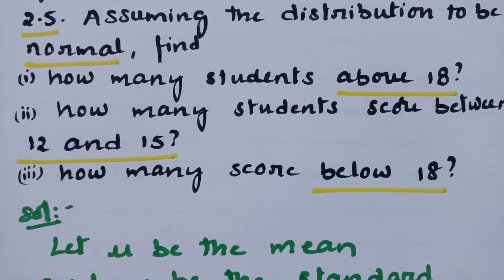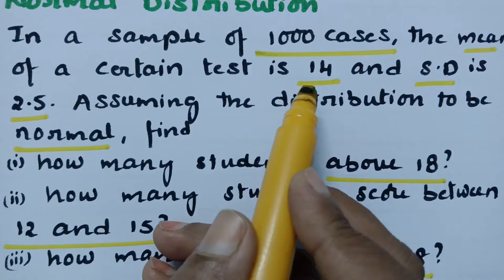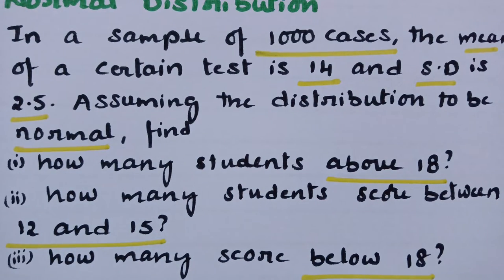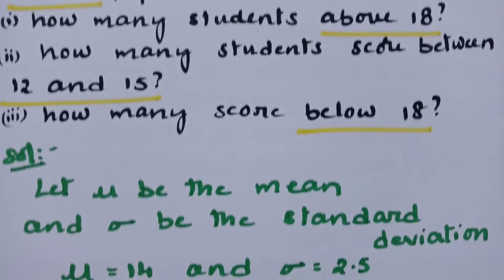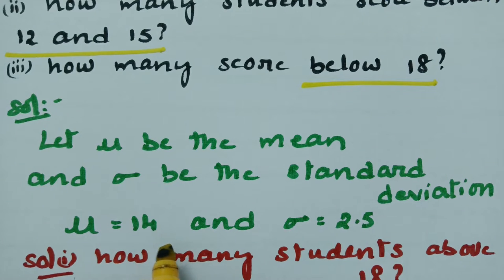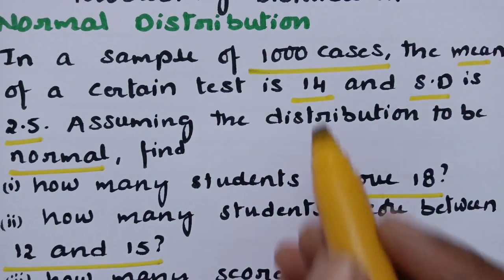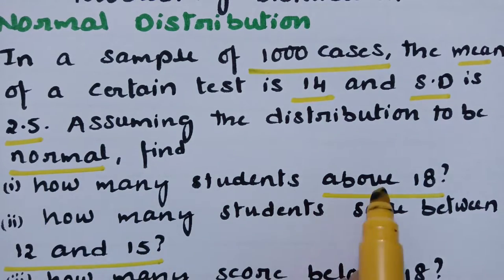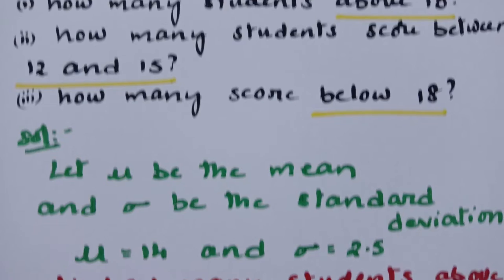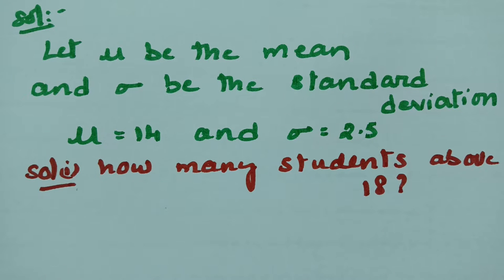For the first question — how many students scored above 18 — we are given: mu (the mean) is 14 and sigma (the standard deviation) is 2.5. First, we find the z-value when x is equal to 18.